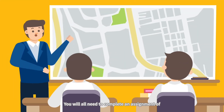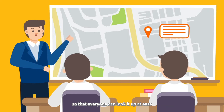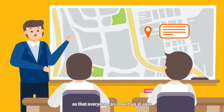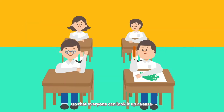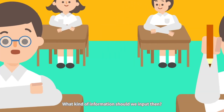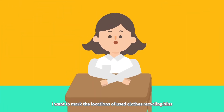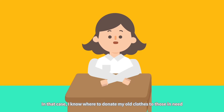You will all need to complete an assignment of inputting information into our school district onto the map so that everyone can look it up at ease. What kind of information should we input then? Let's put details of the nearby tuck shop selling Siomai onto the map! I want to mark the locations of used clothes recycling bins.